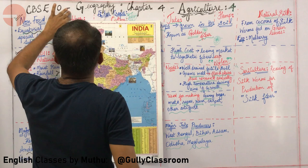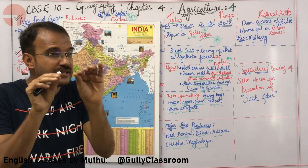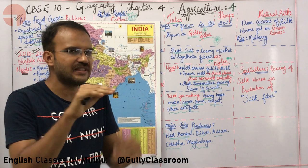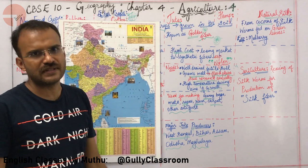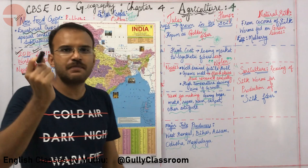Let us first study about hemp. Both jute and hemp give more or less the same kind of fiber, even though they are different plants. In Tamil, the fiber is called Sanal. The scientific name of hemp is Cannabis sativa.